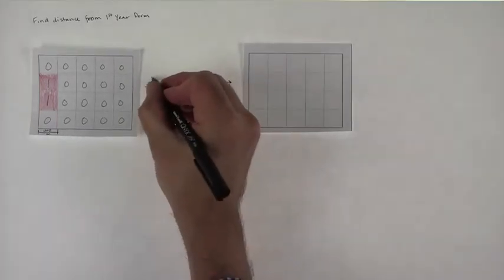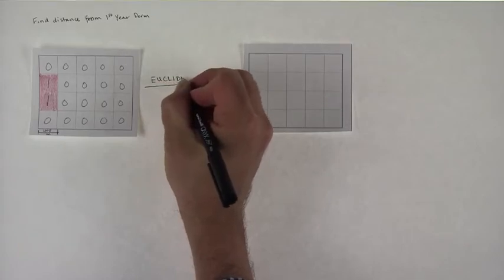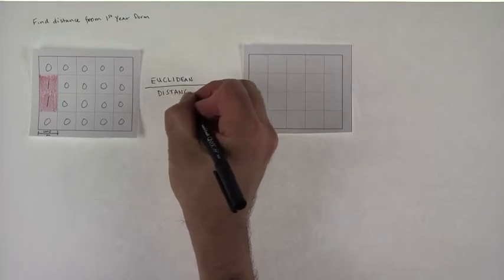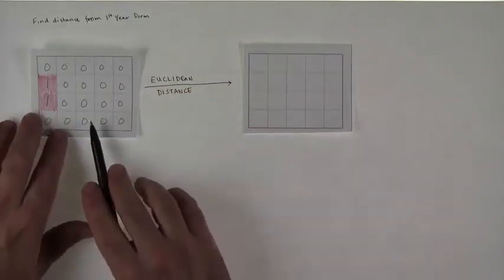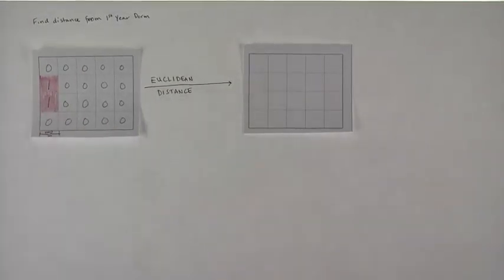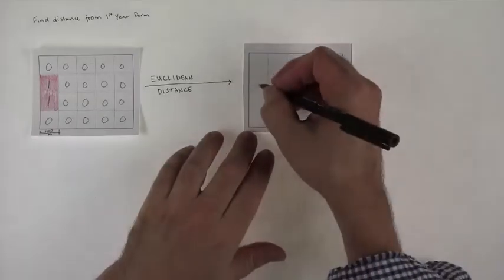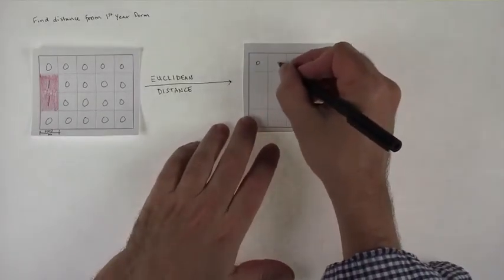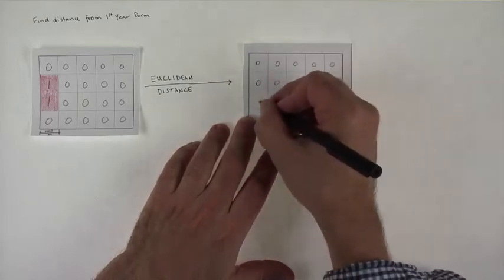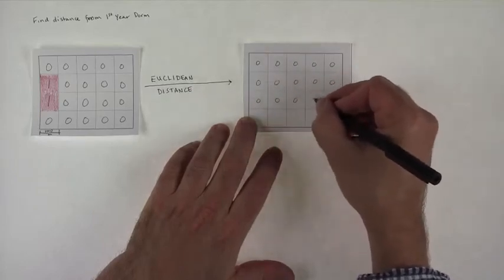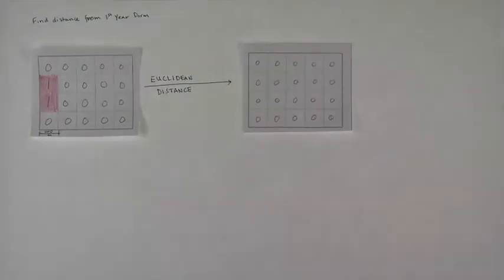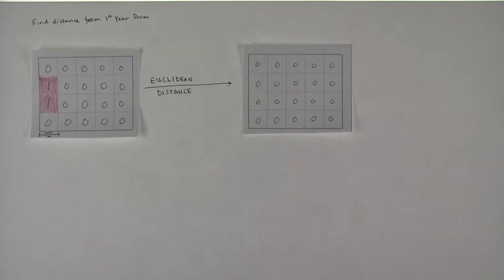So we're going to use a tool called Euclidean Distance to try to do this. But the problem is, if we just took this input, this Boolean raster of ones and zeros and put it into Euclidean Distance, I think our output is going to look like this. Just a big bunch of nothing is what it'll look like.